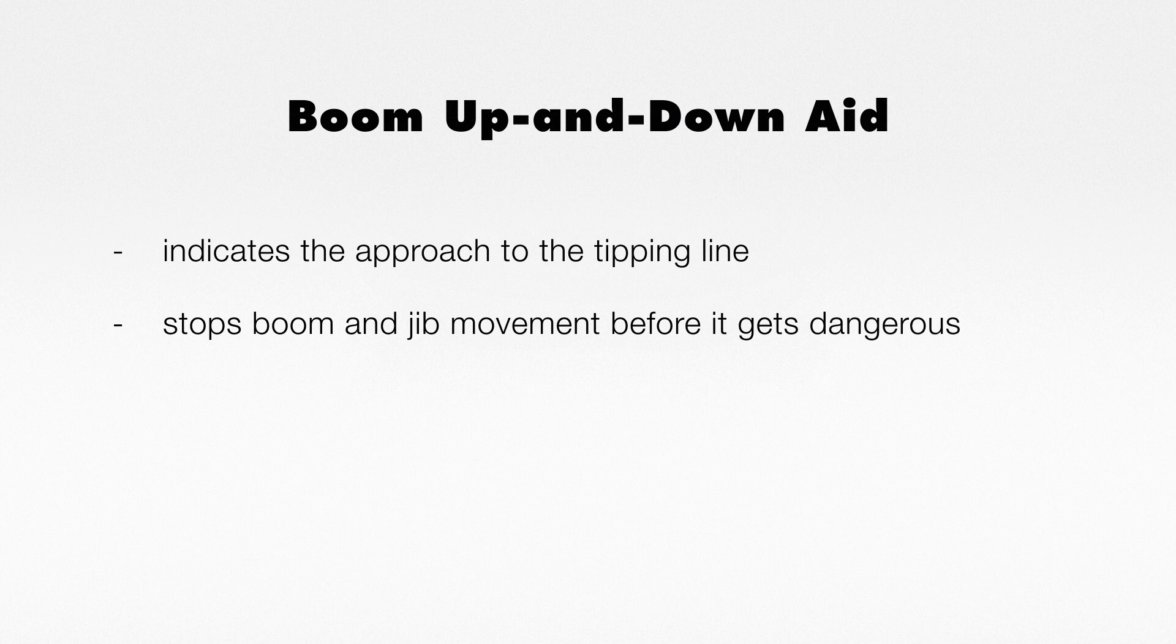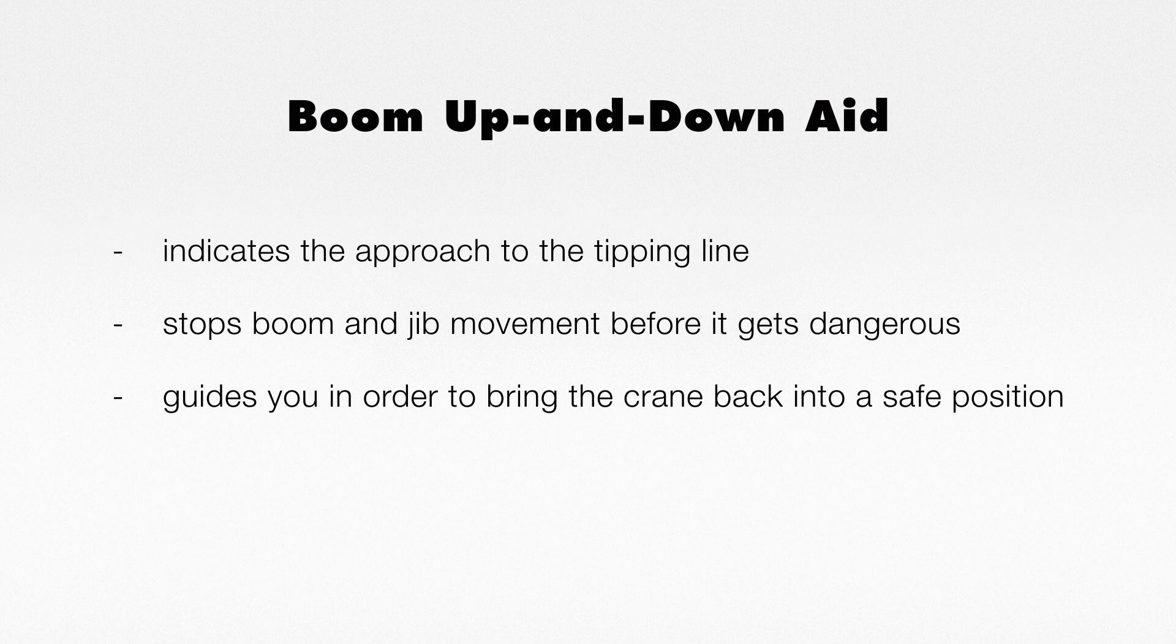The boom up and down aid indicates the approach to the tipping line, stops boom and jib movement before it gets dangerous, guides you in order to bring the crane back into a safe position, and warns you when the wind is getting too strong.